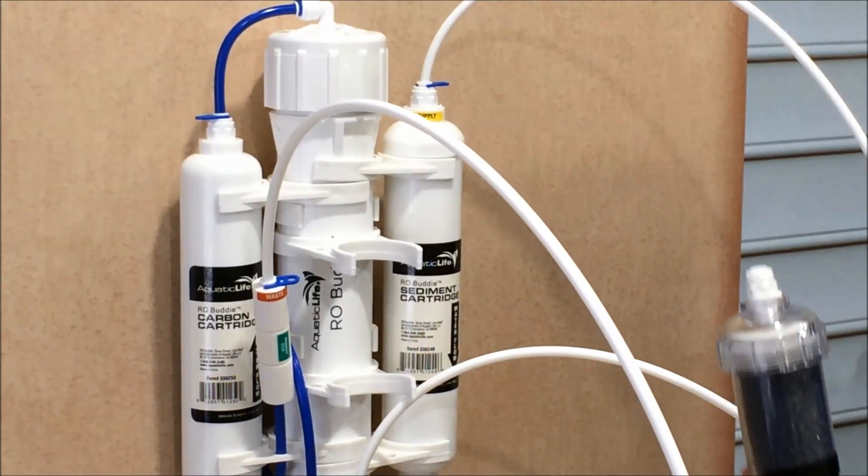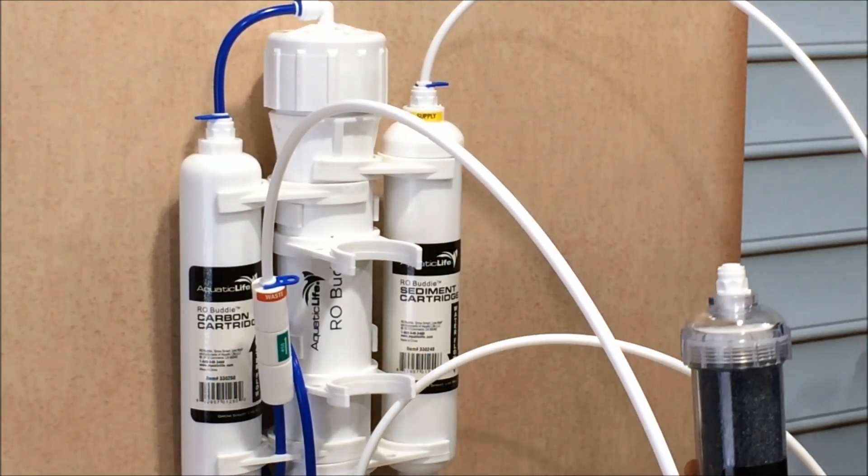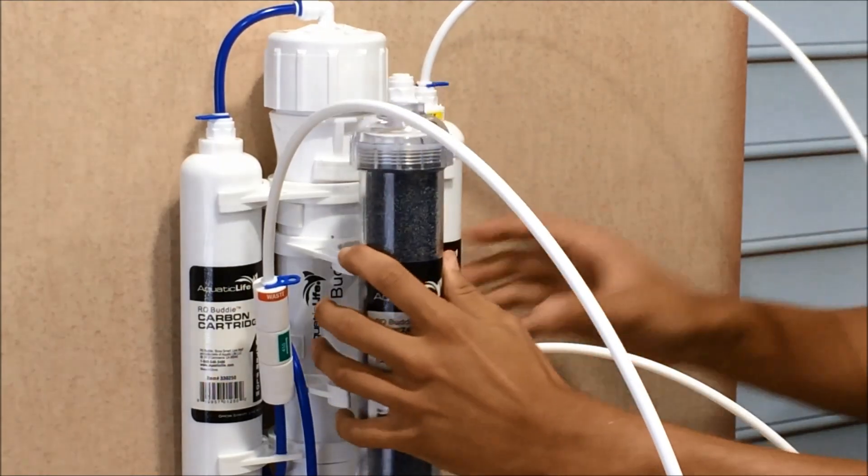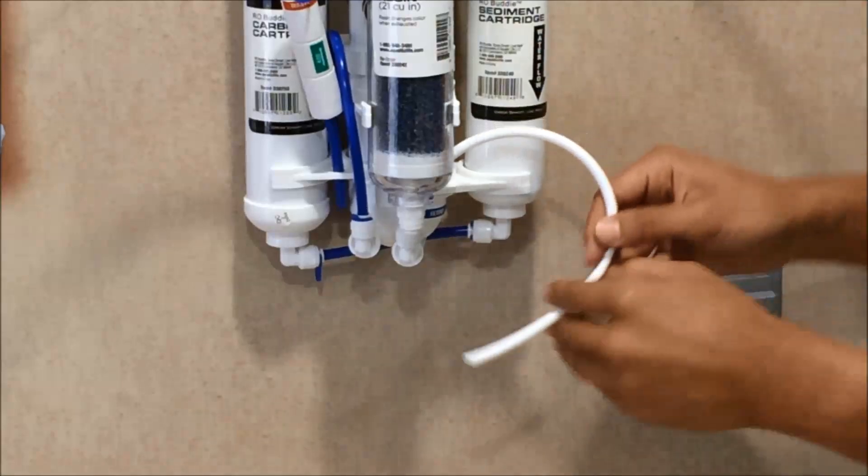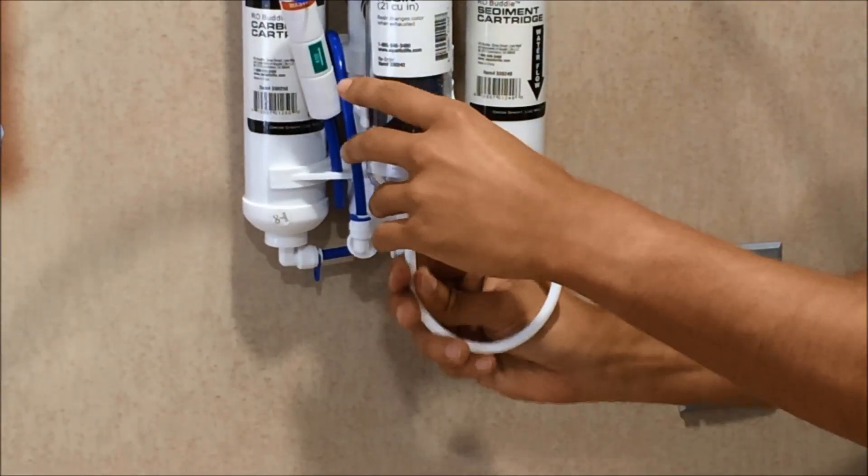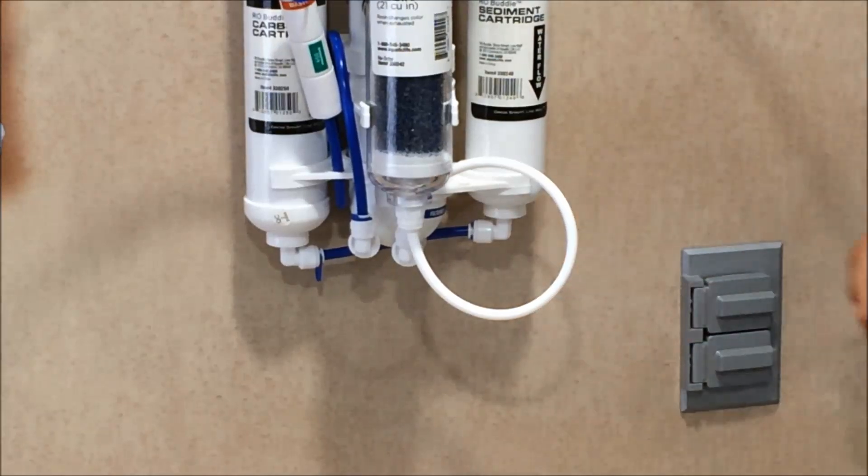And the DI cartridge is bi-directional, so it doesn't matter if the water goes in through the top and out the bottom, or through the bottom and out the top. So once we've already measured it out, we can place the tubing in the bottom of the cartridge and then replace the blue clip.